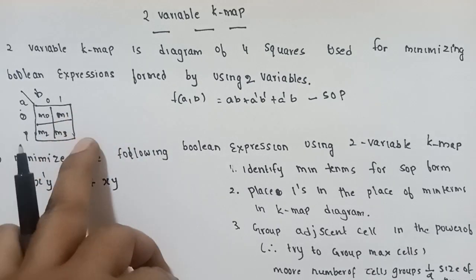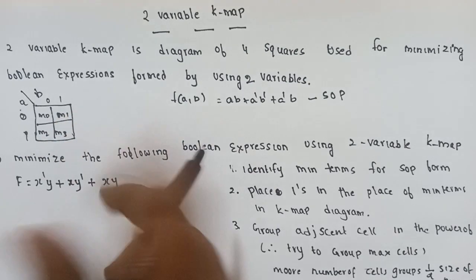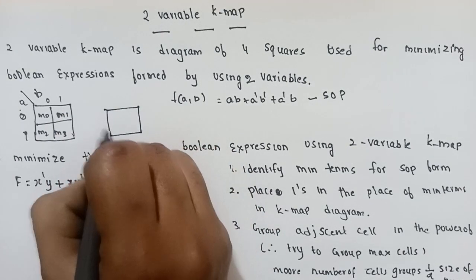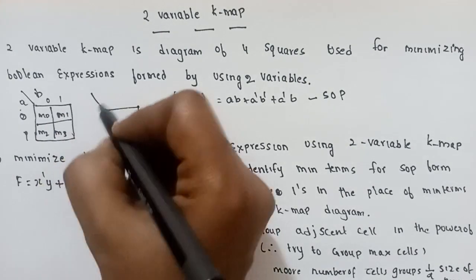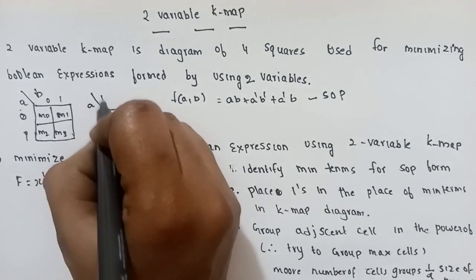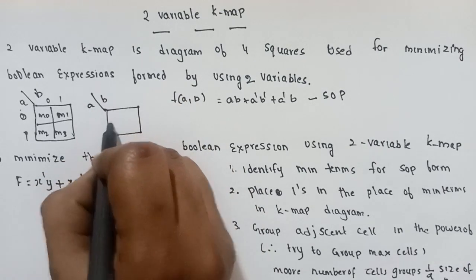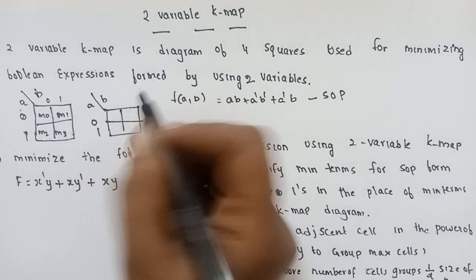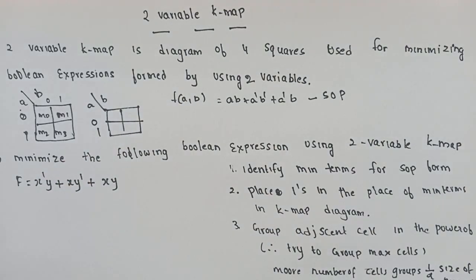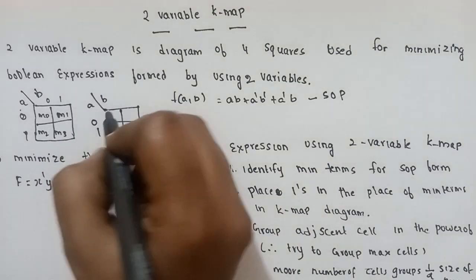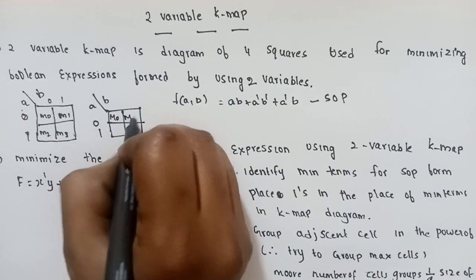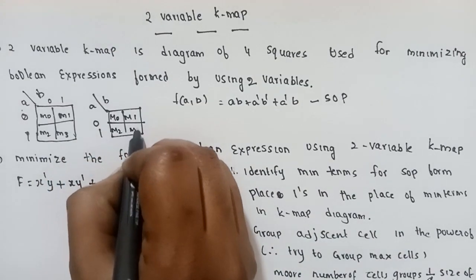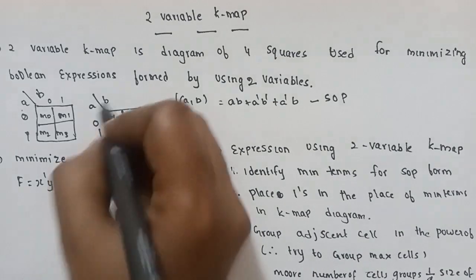So M0, M1, M2, M3. For the POS formula, there are four maxterms: M0, M1, M2, M3.